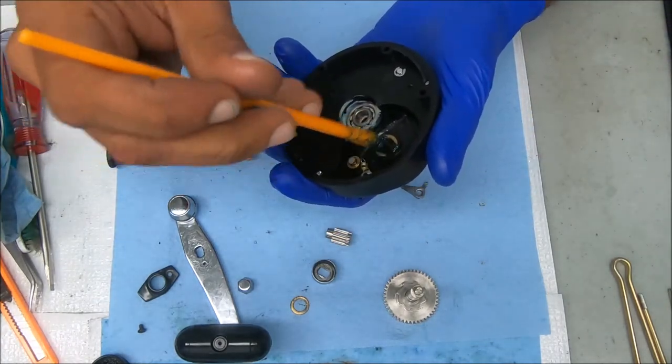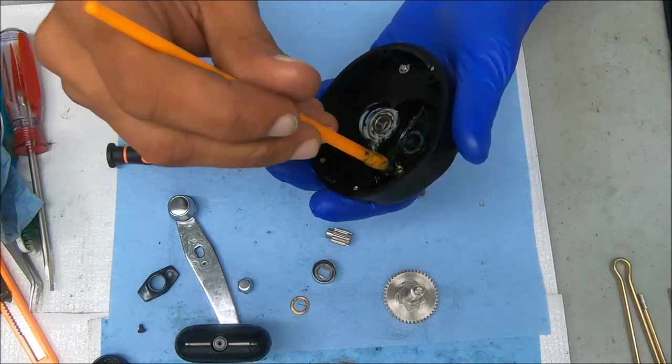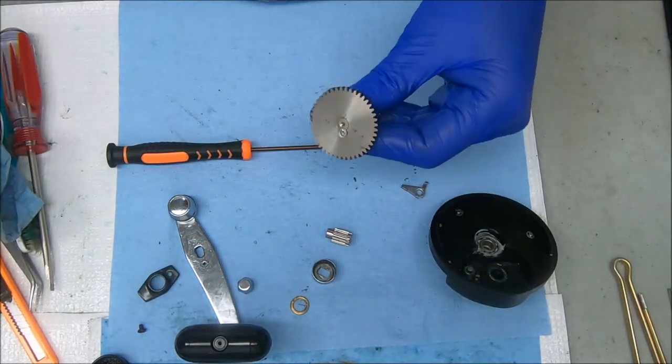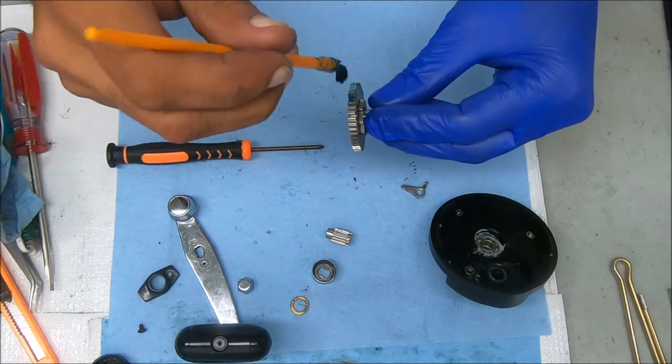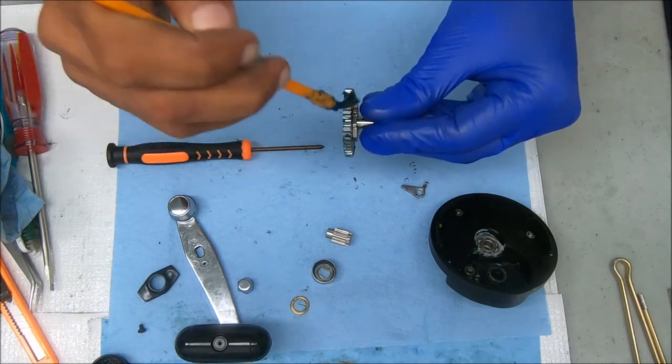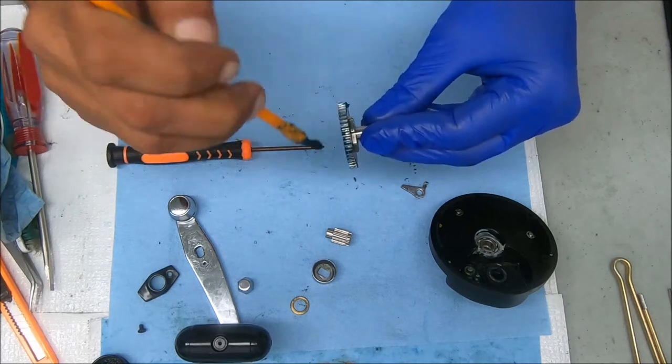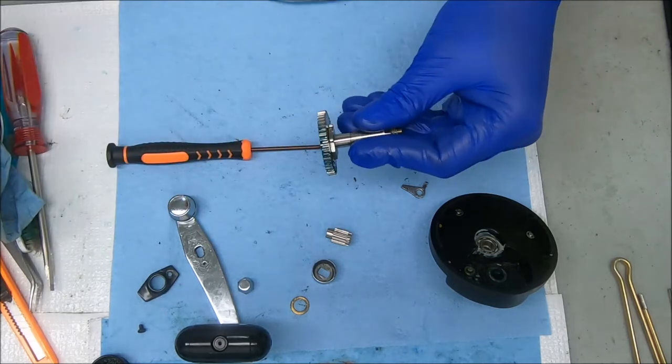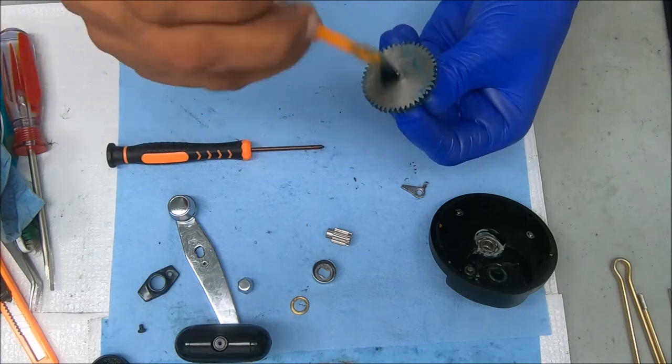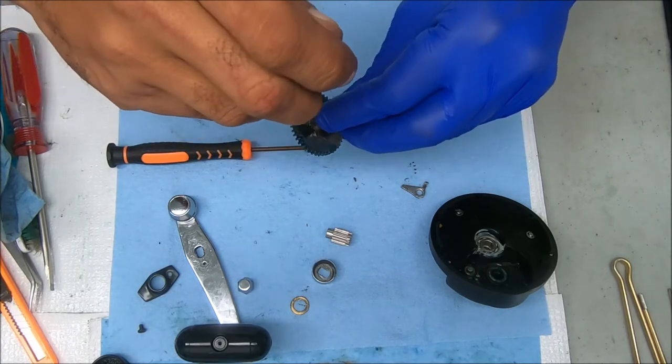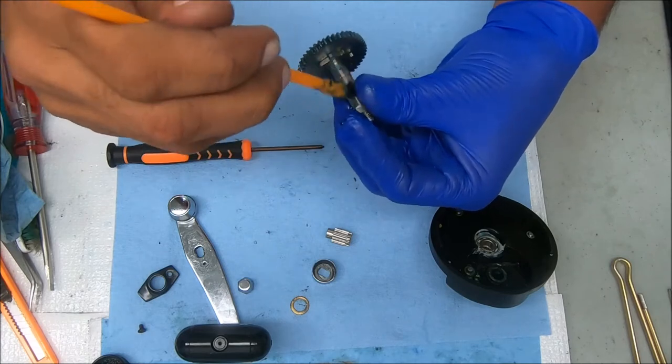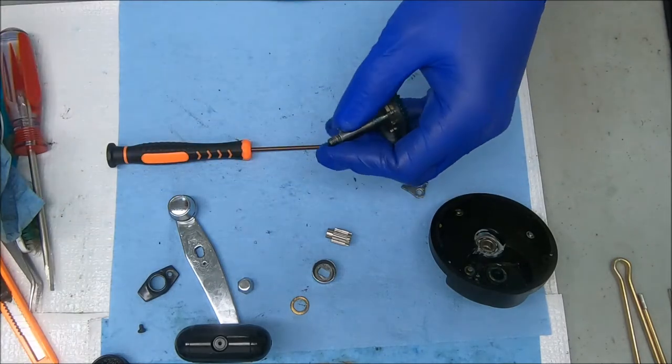I'm going to go ahead and grease this up a little bit as well as right here. I'm going to grease up this gear and the pinion gear. I'm going to grease it around there, but I don't really grease the teeth on the ratchet. I also grease the shaft. Everything is just a light amount of grease.